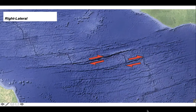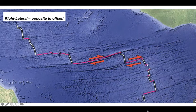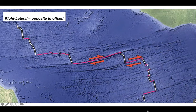Now let's put on the ridge segments again and the seismically active parts of the fracture zones. You can see that the sense of movement defined by the focal mechanisms is opposite to the sense of offset of the ridge segments.